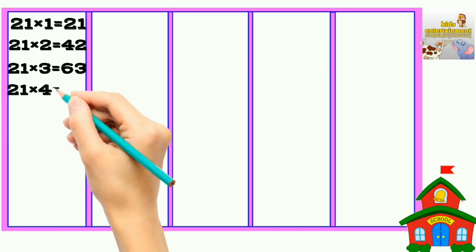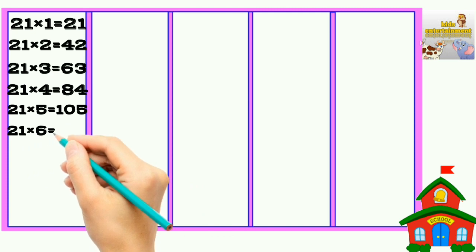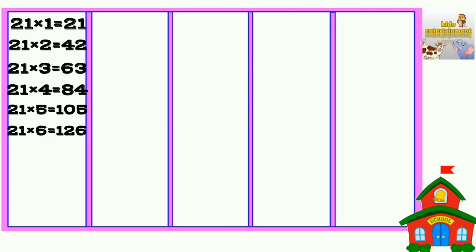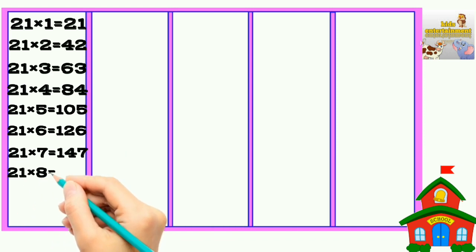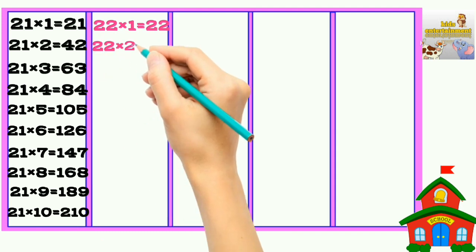21 times 3 is 63, 21 times 4 is 84, 21 times 5 is 105, 21 times 6 is 126, 21 times 7 is 147, 21 times 8 is 168, 21 times 9 is 189, 21 times 10 is 210. 22 times 1 is 22.